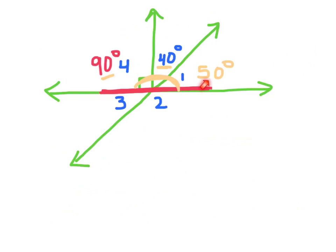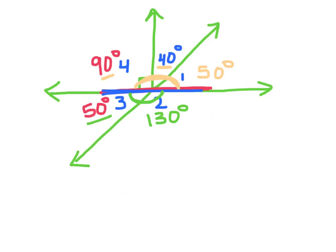Next I look at angle 1 and angle 3. Those are vertical angles — formed by two intersecting lines and across from each other. Since vertical angles are equal, angle 3 also measures 50 degrees. Then I look at the straight line on the bottom. Angle 3 and the adjacent angle form a linear pair, so they have to equal 180. Since angle 3 is 50, the remaining angle is 130 degrees. I found all the measures using linear pairs, vertical angles, and adjacent angles.